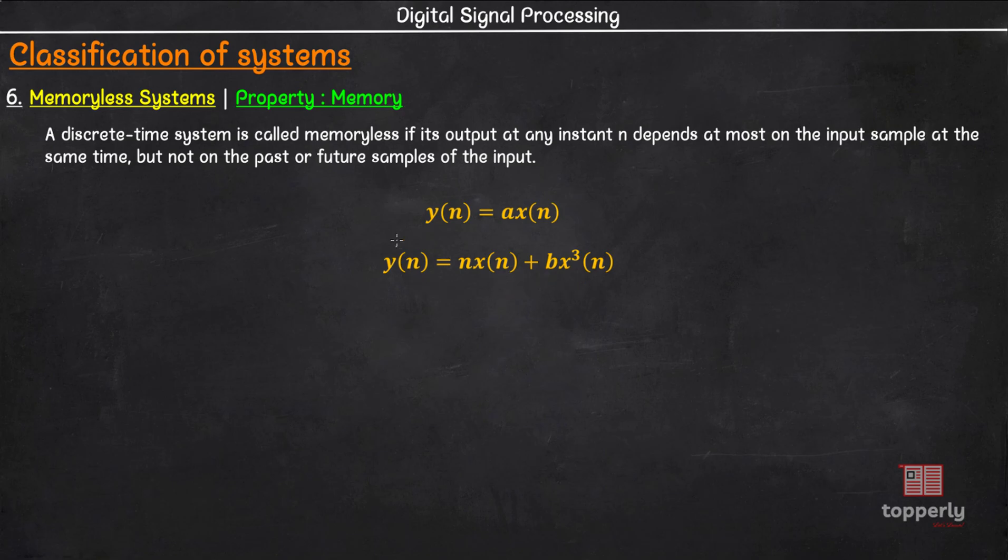If you see both these systems, there is no need to store any past inputs or outputs in order to compute the present output. That is, no memory of the past inputs or outputs are required. Therefore, memoryless systems cannot include any delay elements. Now, another term for a memoryless system is static system.